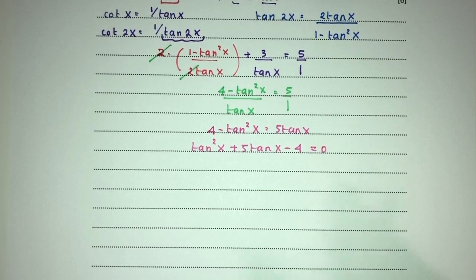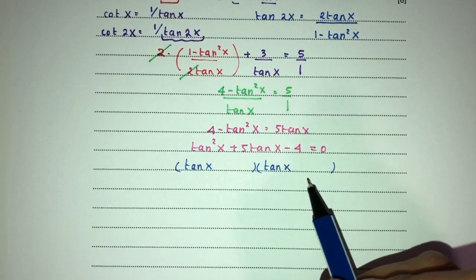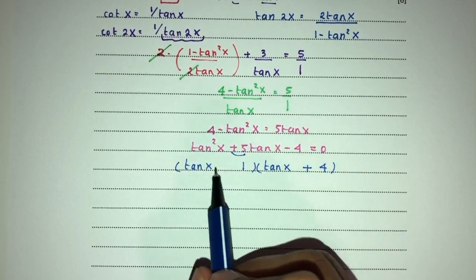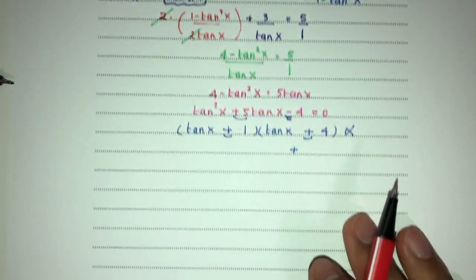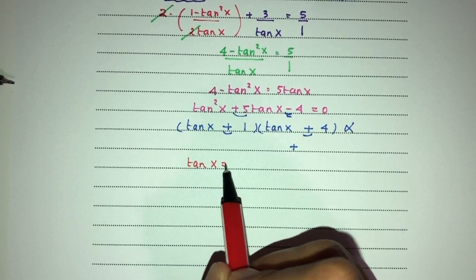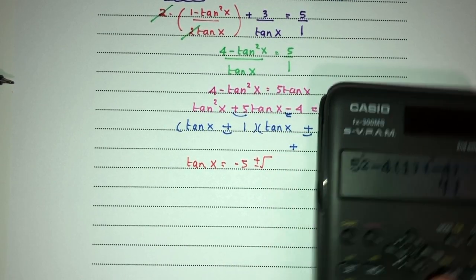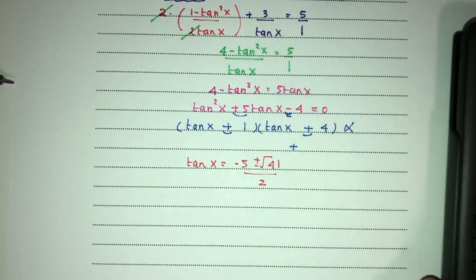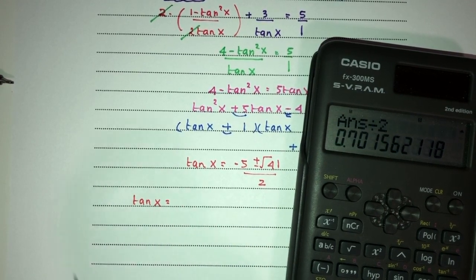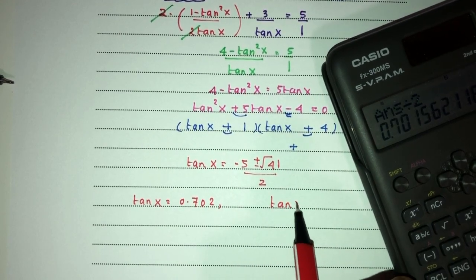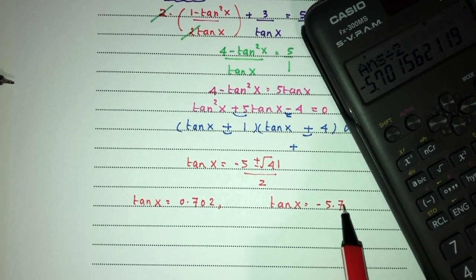Of course you can use your formula or we can try to factorize this right now. So it should be pretty simple. That will be tan of x and tan of x. Now 4 is simply the value of 4 times 1. To get plus 5 we have to have plus 4 and plus 1. But here you can see we have negative here. So minus or plus times plus is plus. So this is not good. Now let's try to use our formula which is tan of x is equal to minus b plus minus root of b squared minus 4 times a times c. That will be 41. Over 2a that should be 2. So first one tan of x is plus root of 41 divided by 2. That will be 0.702 or tan of x could be minus 5 minus root of 41 divided by 2. Minus 5.702.